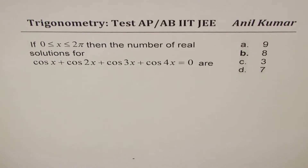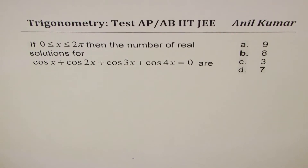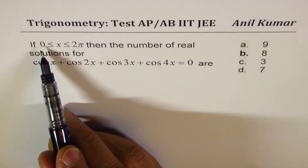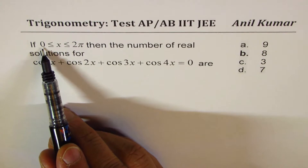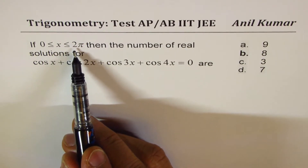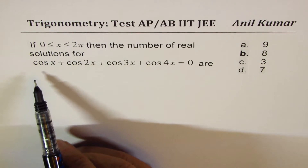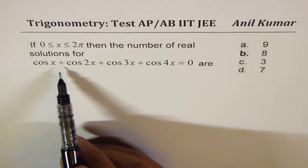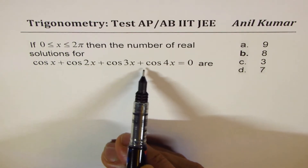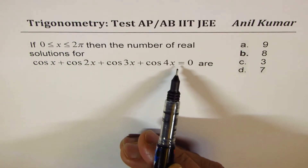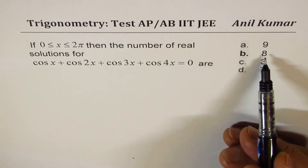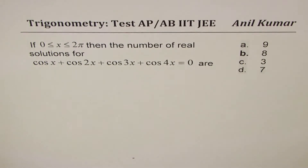I'm Adil Kumar sharing with you the solution of a question from an IIT JEE test paper. The question is: if x is greater than or equal to 0 and less than or equal to 2π, then the number of real solutions for cos x + cos 2x + cos 3x + cos 4x = 0 are 9, 8, 3, or 7?